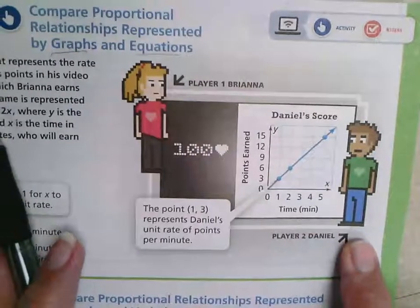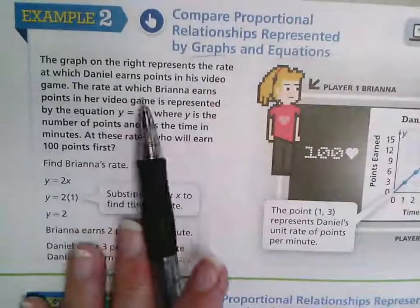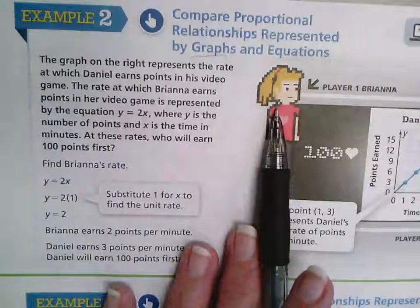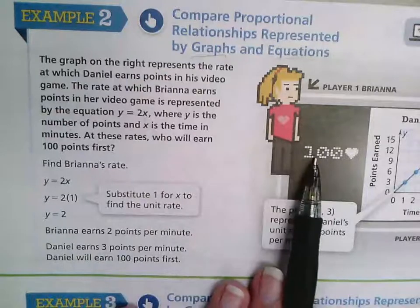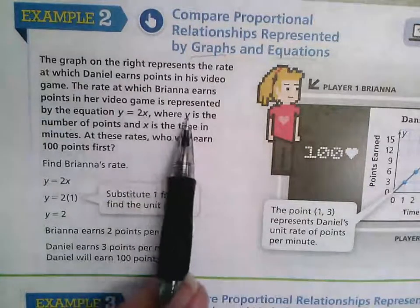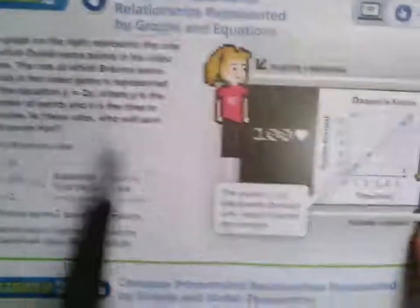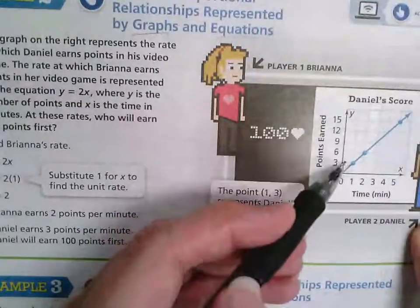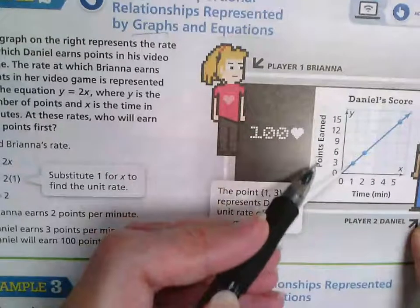The rate at which Brianna earns her points is represented by the equation y equals 2x, where y is the number of points. So here's our y-axis, and that's the number of points.